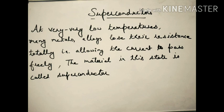What is the definition? At very very low temperatures, many metals and alloys lose their resistance totally, allowing the current to pass freely. The material in this state is called a superconductor. The resistance becomes zero, the current flows freely at very low temperature — that material is called a superconductor.